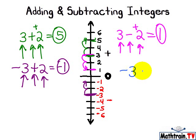Negative 3 minus 2, well, we start at negative 3, and we subtract 2 positives. So, down here, and we end up at negative 5.